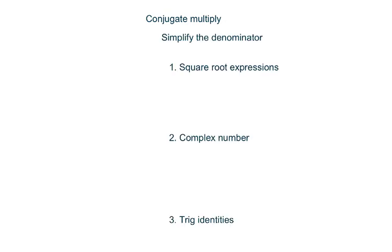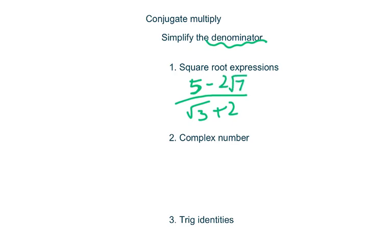Today's lesson is about conjugate multiply. In math, conjugate multiply is used to simplify denominators. Normally it's used in square root expressions such as square root of 3 plus 2, with a numerator of 5 minus 2 square root of 7. For complex numbers, for example when we have 3 plus 2i, then the top will be 6 minus 5i.